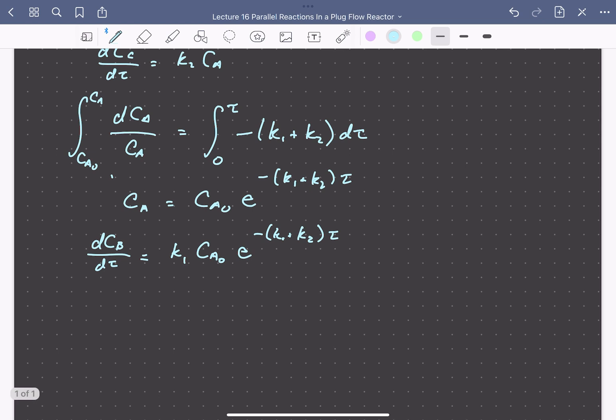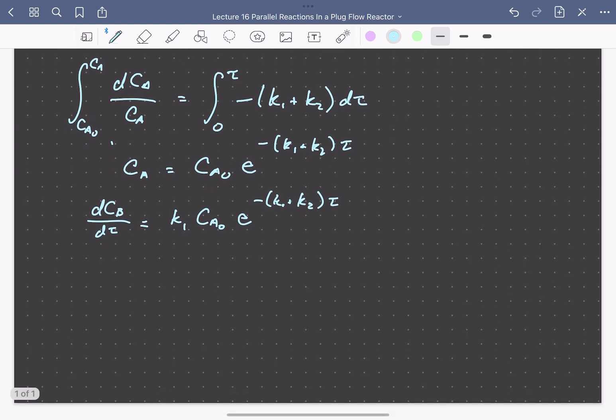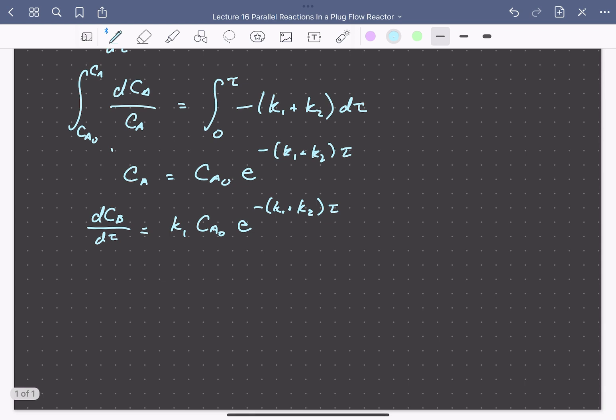Separating and integrating with the assumption that there's no B fed to the reactor (CB0 = 0), we get CB equals CA0 times K1 divided by (K1 plus K2) times [1 minus e to the minus (K1 plus K2) times τ].